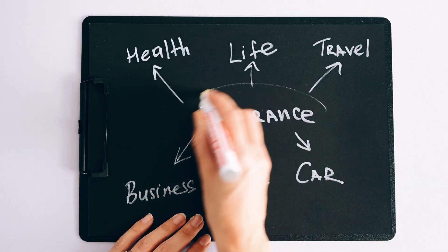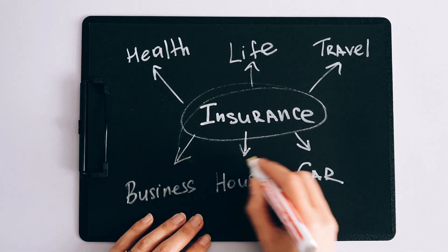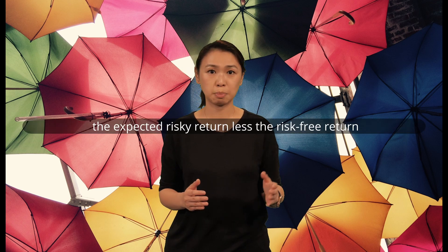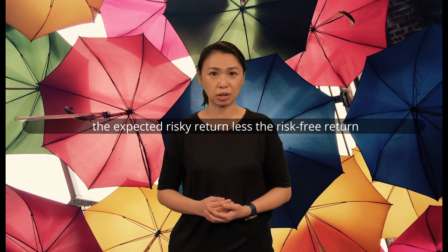So the big question is: why do we need AI in insurance? We need AI in insurance because insurance companies often have problems determining risk premium. A risk premium is a measure of excess return that is required by an individual to compensate them for being subjected to an increased level of risk. It is widely used in finance and economics, with the general definition being the expected risky return less the risk-free return.